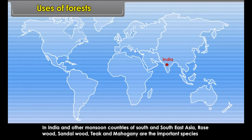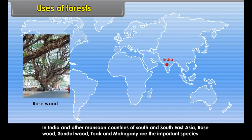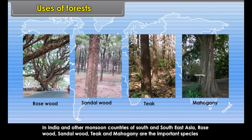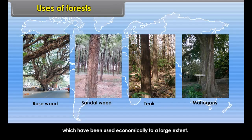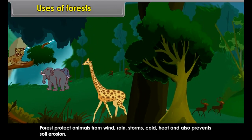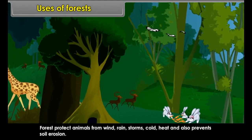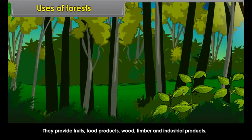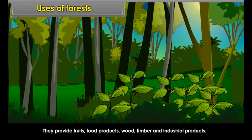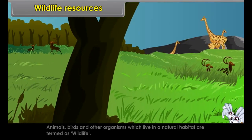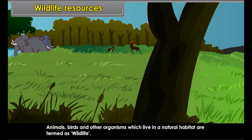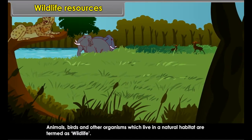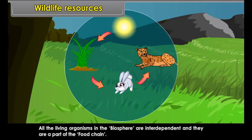Forest resources can be used for different purposes. Commercial utilization of temperate, evergreen and coniferous forests is very high. Norway, Sweden, Finland and Canada are important exporters of several forest products such as paper, wood pulp and newsprint. In India and other monsoon countries of South and Southeast Asia, rosewood, sandalwood, teak and mahogany are the important species used economically. Forests protect animals from wind, rain, storms, cold and heat, and also prevent soil erosion. They provide fruits, food products, wood, timber and industrial products.